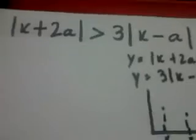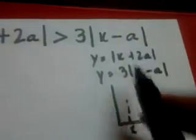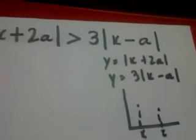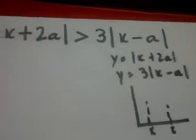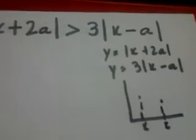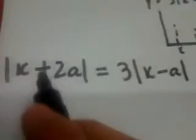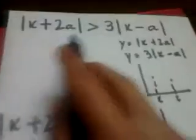For finding the points of intersection, it's really simple. We just have to equate these two functions. So if we equate, this function is equal to this function.